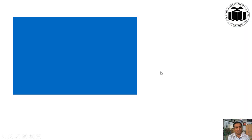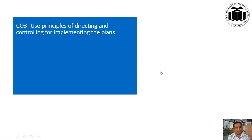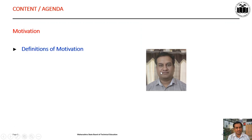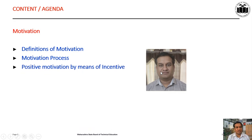Under this subject, we are going to discuss about the principles of directing and controlling for implementing the plans. That is the course outcome of this management subject, and we are going to focus on one unit outcome: selecting the appropriate method of communication from the available methods with motivation. So we are going to discuss about motivation — different definitions of motivation, motivation process, and positive motivation by means of incentives.